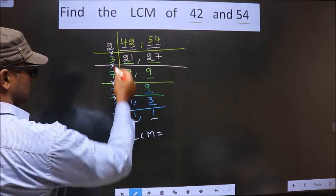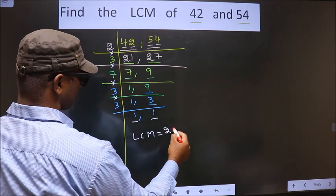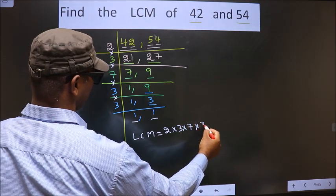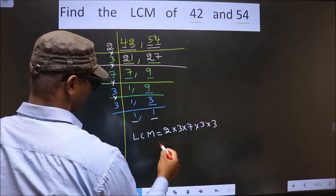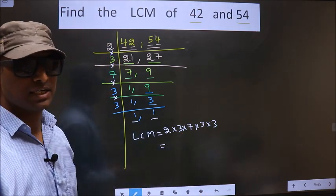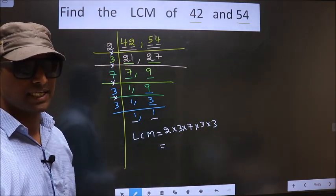That is 2 into 3 into 7 into 3 into 3. You multiply all these numbers. Whatever number you get, that will be your LCM.